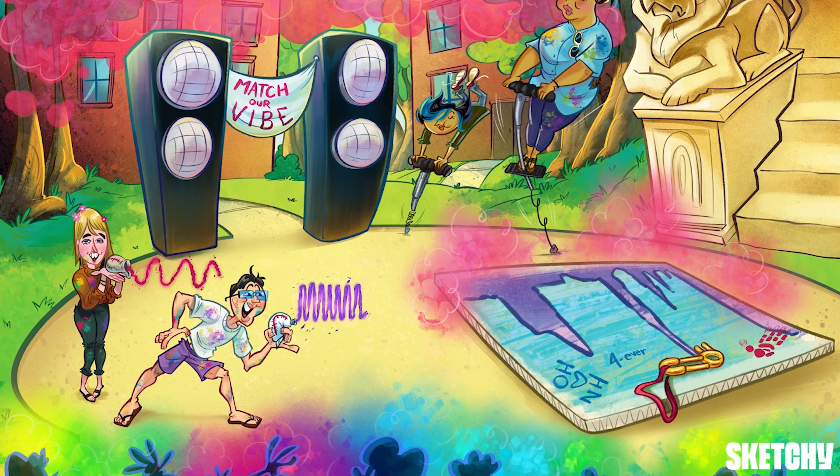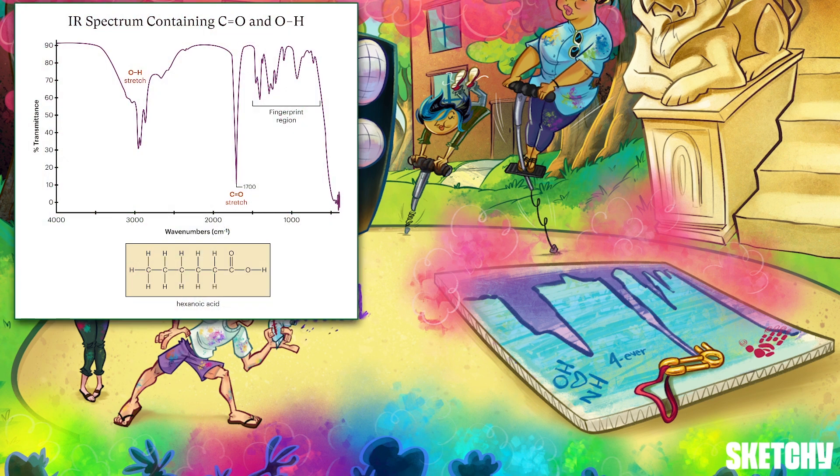Someone misunderstood this event and thought they'd be painting for real — their loss, our gain. We'll use their masterpiece, which just happens to look like an IR spectrum, to talk about the vibration frequencies of different functional groups. The real IR spectrum looks like upside-down mountains — each dip downward is called a peak and represents frequencies of light that were absorbed by the molecule.